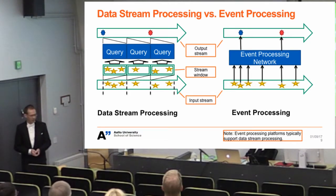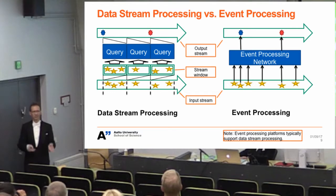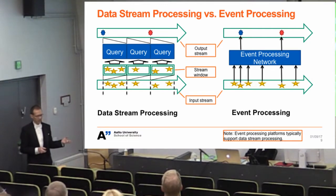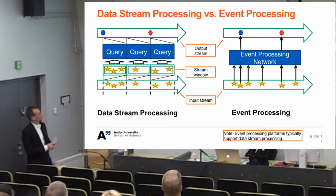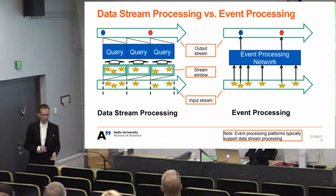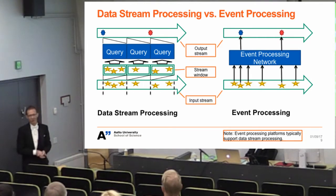In stream processing, the main disciplines have been data stream processing and event processing. In data stream processing, the first operation is to cut a time window out of the stream — you take a limited amount of time, run a query over that, and get a response. In event processing systems, you start from the events themselves and run a query over those, which can typically look at patterns. You can see that time-window data stream processing is a special case of event processing. An event processing system will have a windowing operator, but if you cut time windows as the first operation, you can no longer get back to your complete stream.